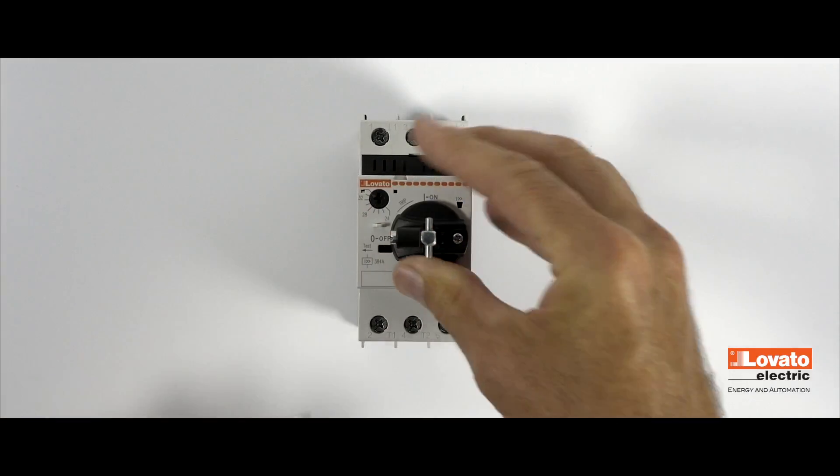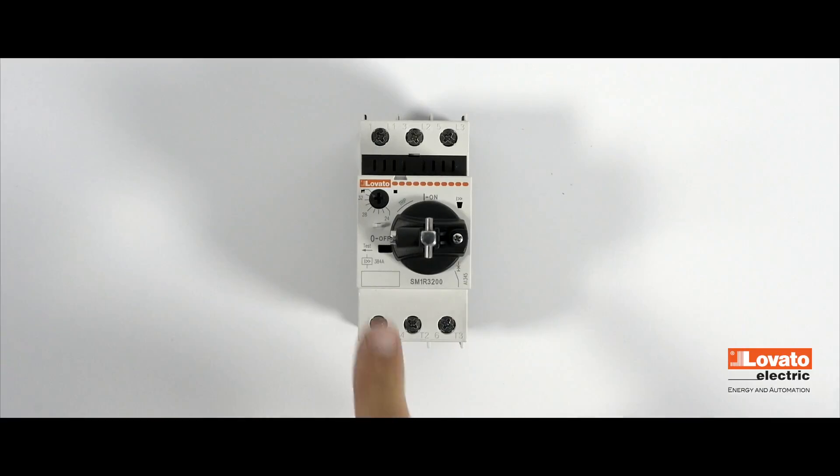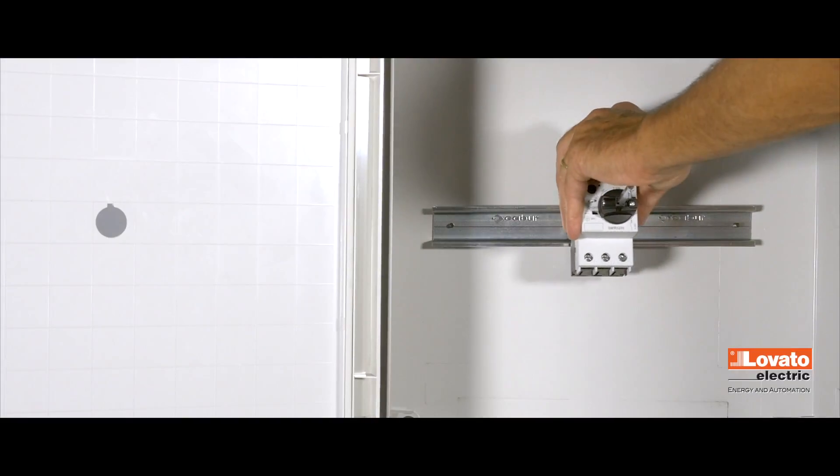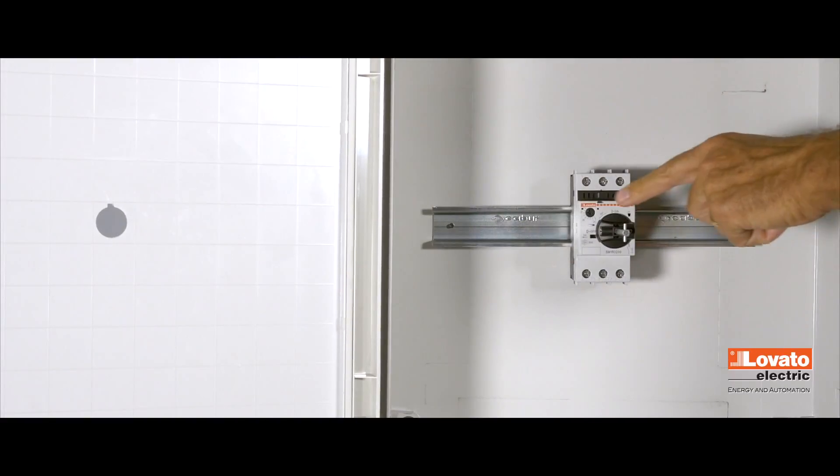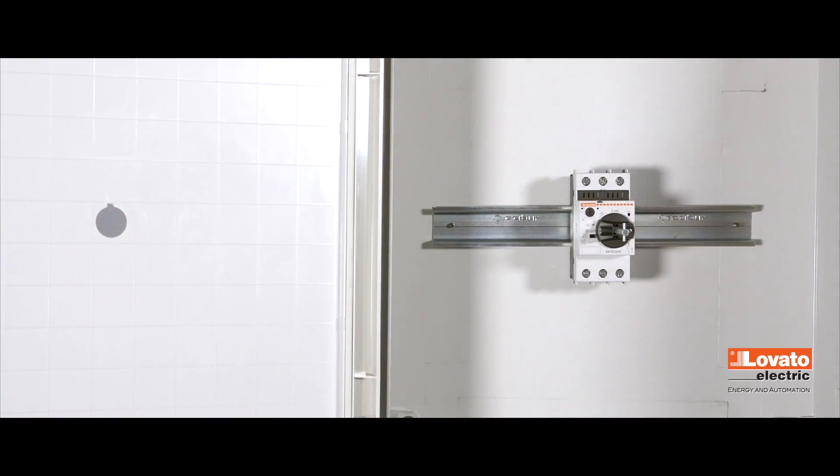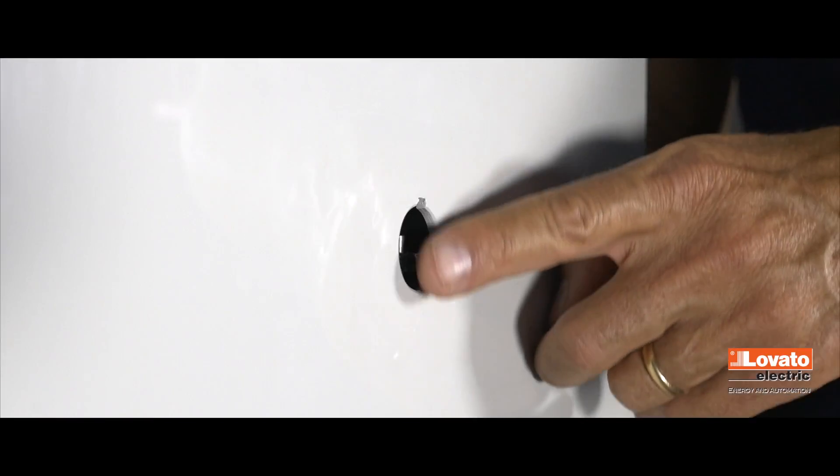Note the motor protection circuit breaker must be set on off and the rod's plug must be vertical. Put the motor protection circuit breaker on the DIN rail, making sure that the control knob is in the off position and the rod's plug is vertical. Cut the rod flush with the door.